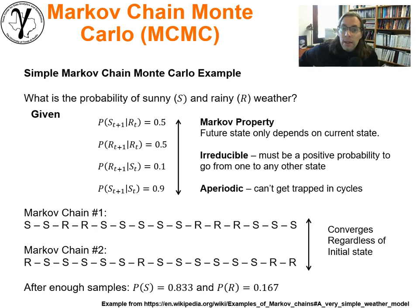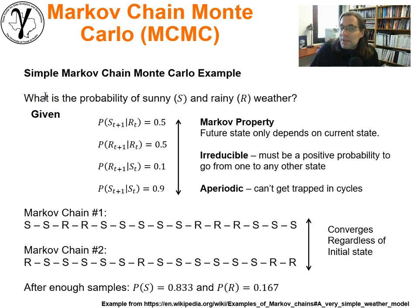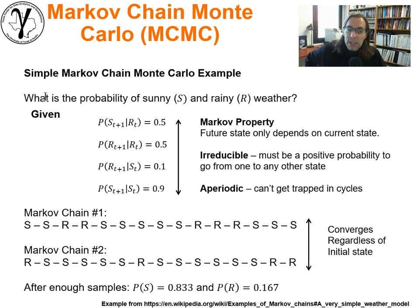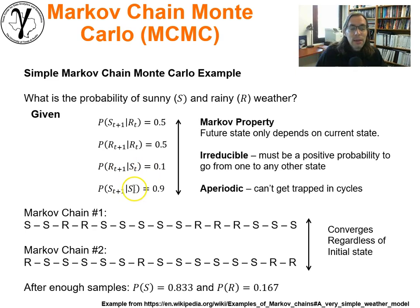Let's take a really nice example taken from Wikipedia — they have a great page on Markov chain examples. This is the very simple weather model. We have a sunny or rainy state from day to day, and we want to calculate the probability of sunny or rainy weather. All we have available are the following conditional probabilities: if it's raining today, there's a 50% chance of sunny tomorrow and 50% chance of rainy tomorrow. If it's sunny today, there's a 10% chance of being rainy tomorrow and 90% chance of being sunny tomorrow.